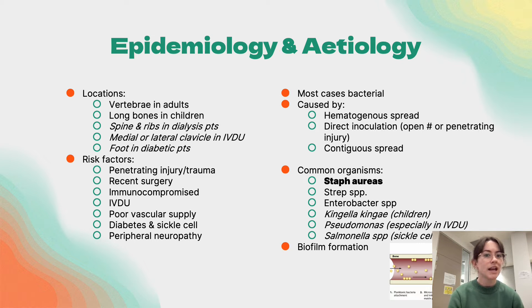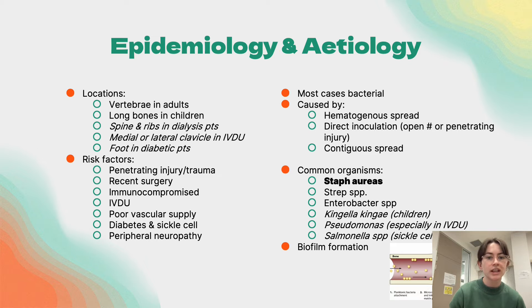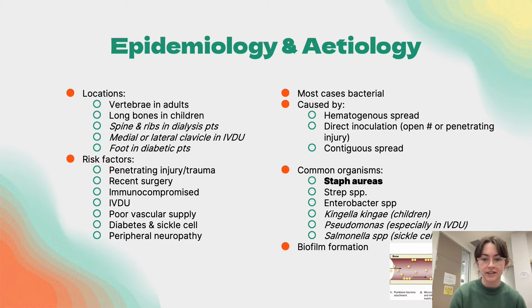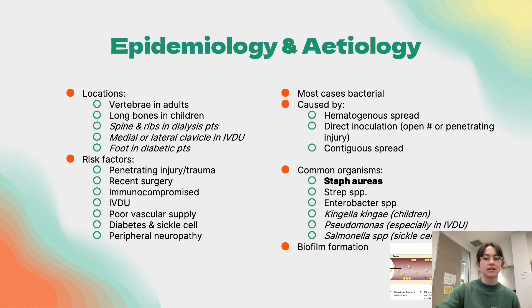Most cases are bacterial, and infection occurs by three mechanisms: hematogenous, direct inoculation, and contiguous spread. Hematogenous spread is usually due to bacterial or viral systemic illness, and Staph aureus is the most common organism. Direct inoculation occurs when a penetrating injury introduces infection directly into the bone. Contiguous spread includes nearby wounds or surgery with local spread.